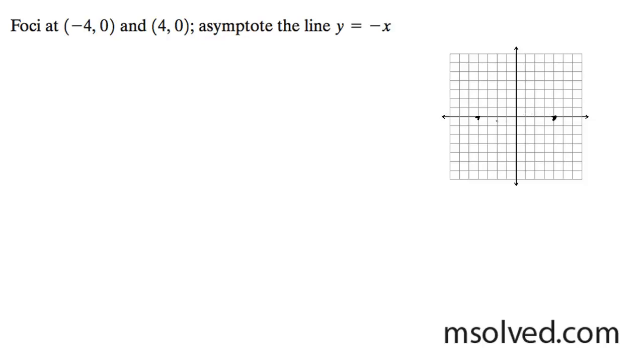And then we have the asymptote y is equal to negative x. Like that. So what this means is x and y have to be equal.